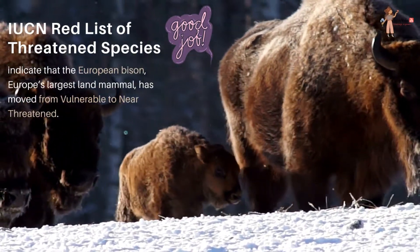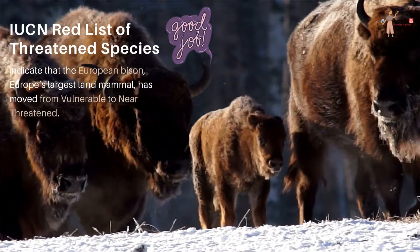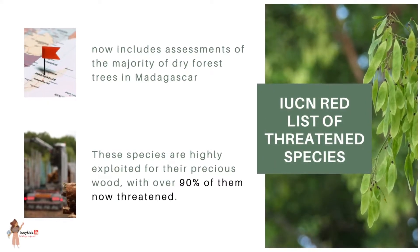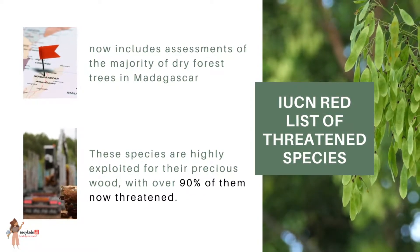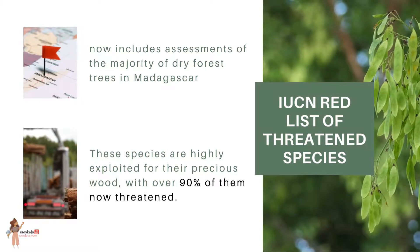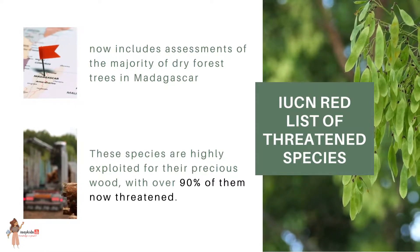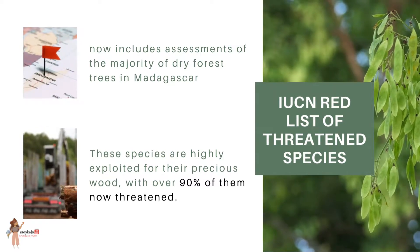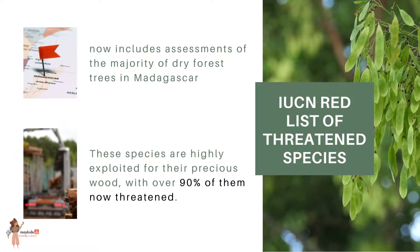The European bison, Europe's largest land animal, has moved from vulnerable to near threatened, thanks to continued conservation efforts. The IUCN Red List now includes assessments of the majority of dry forest trees in Madagascar, including updated assessments for 23 rosewood and dalbergia tree species. These species are highly exploited for their precious wood, with over 90% of them now threatened. Rosewood species are used across the world in the timber trade and are among the world's most illegally trafficked byproducts.